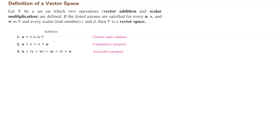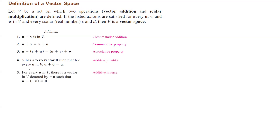Grouping doesn't change addition, so u plus (v plus w) is the same as (u plus v) plus w — that's the associative property for addition. Set V has a zero vector such that for every element u in that set, u plus zero equals u. This is called additive identity.